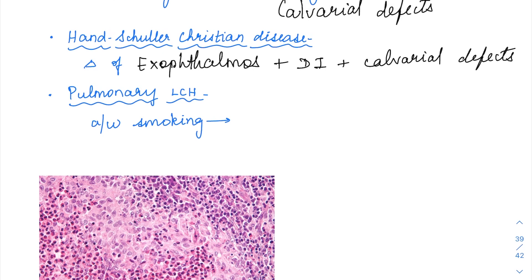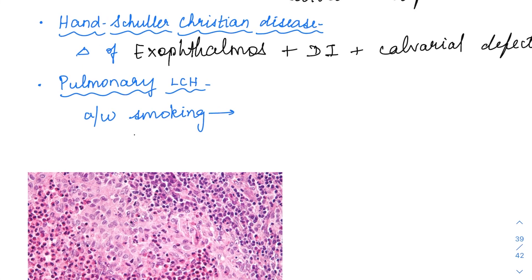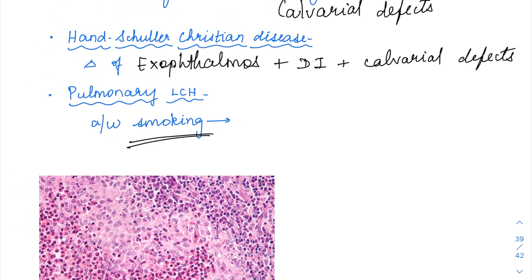The last form is the pulmonary form of LCH. In pulmonary or in the lungs also you can have this LCH which is very commonly associated with smoking. Whenever the patient is smoking, they can develop pulmonary LCH and the best thing about this is with stopping the smoking habit, this LCH is going to regress.